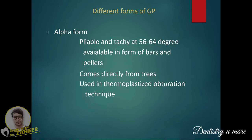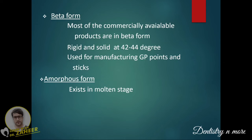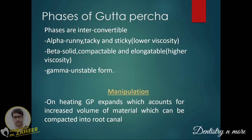There are different forms of gutta percha. The alpha form is pliable and tacky at 56–64°C, available in bars and pellets, coming directly from trees, and used in thermoplasticized obturation techniques. The beta form is the most commercially available product — rigid and solid at 42–44°C — and is used for manufacturing GP points and sticks. The hemophage form exists in a molten stage.